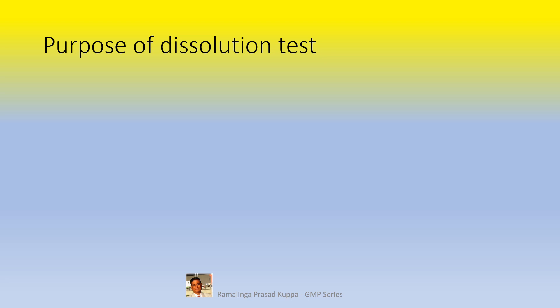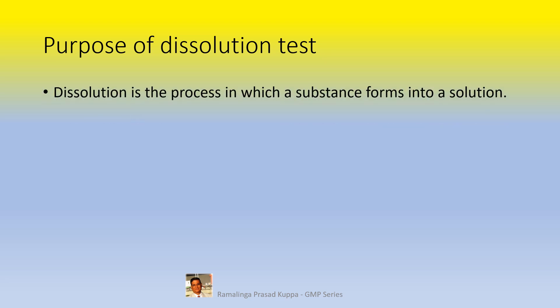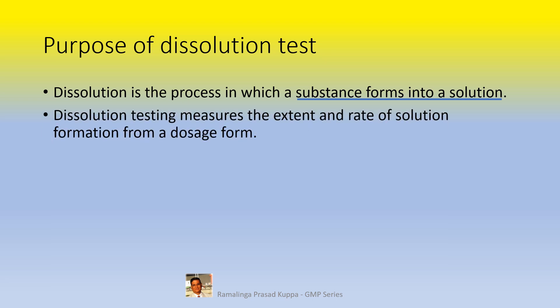Purpose of Dissolution Test. Dissolution is the process in which a substance forms into a solution. The dissolution process is dissolving the acceptable set amount of the active ingredient into solution. Dissolution testing measures the extent and rate of solution formation from a dosage form. This test measures how fast or how slow the active should be released and how much should be released into the necessary part of the body system to be therapeutically effective.